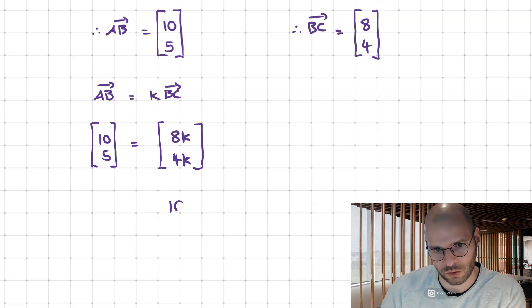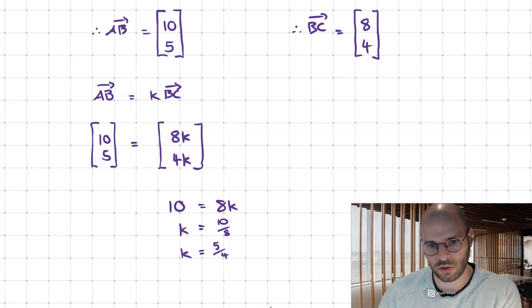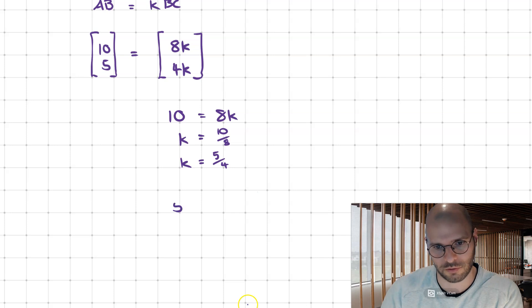Next, I simply build one equation. 10 equals 8k, so k equals 5 over 4. Then verifying, 5 equals 4k gives k equals 5 over 4.